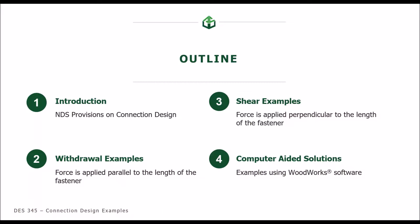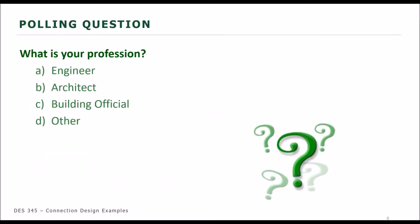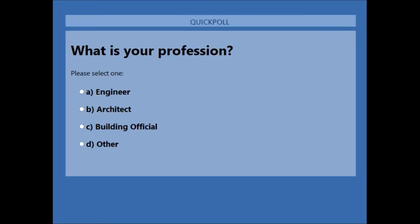We're going to start with our first poll. This one is really easy because there's no wrong answer — it's just what is your profession. We have this one always, so go ahead and vote. As usual, I give you about 30 seconds and wait until about 80% of you have voted. We like to get an idea of who our audience is.